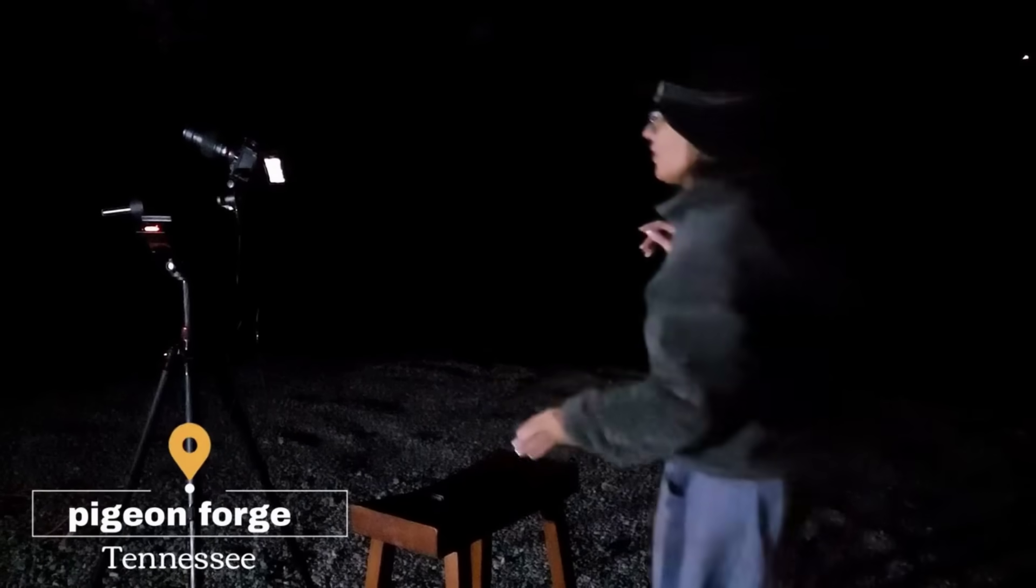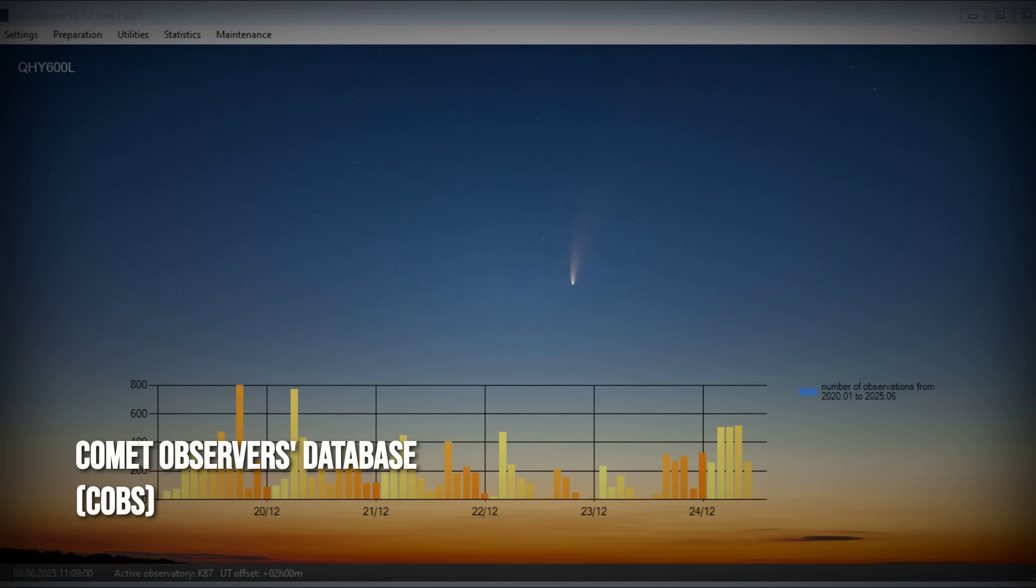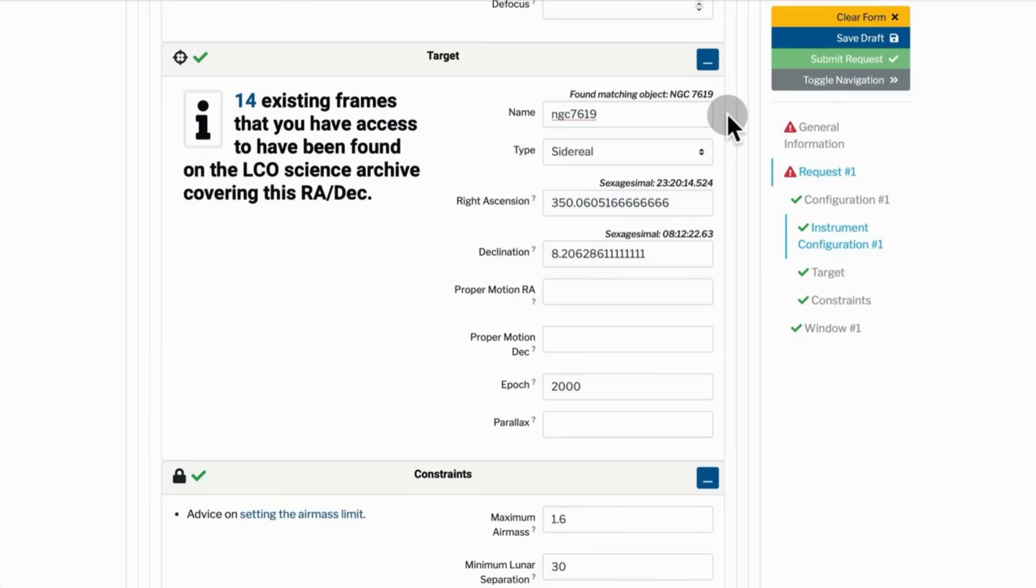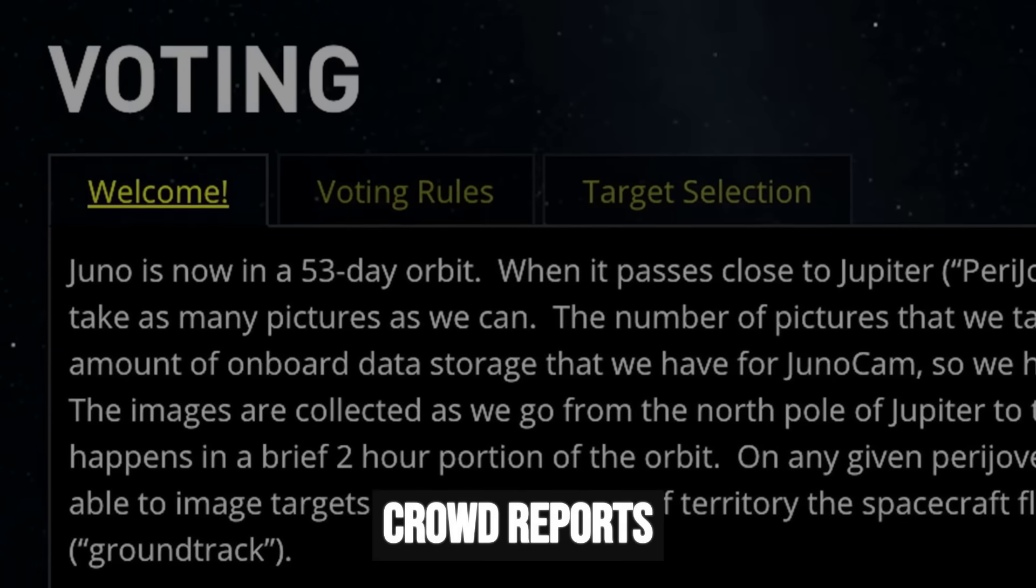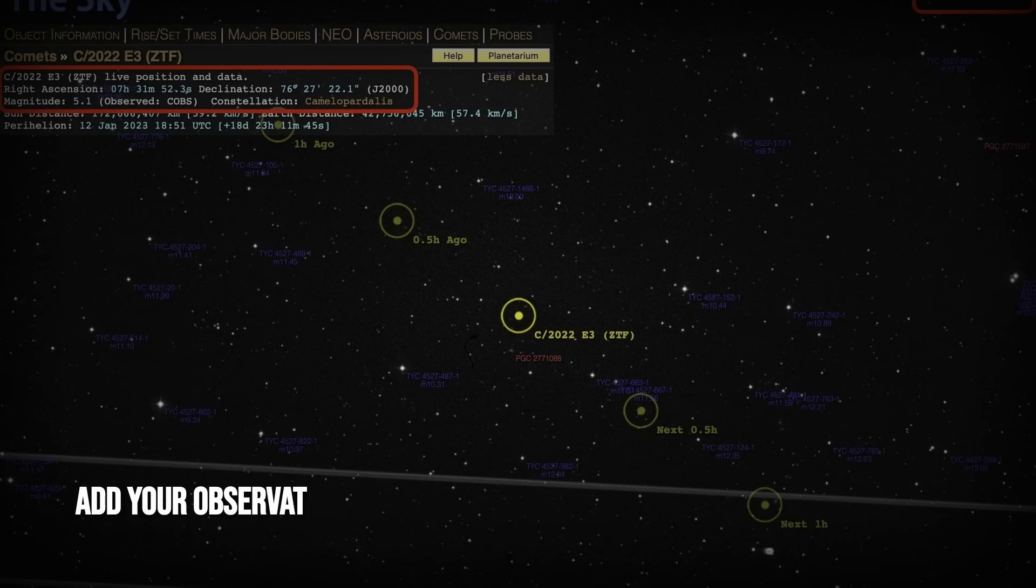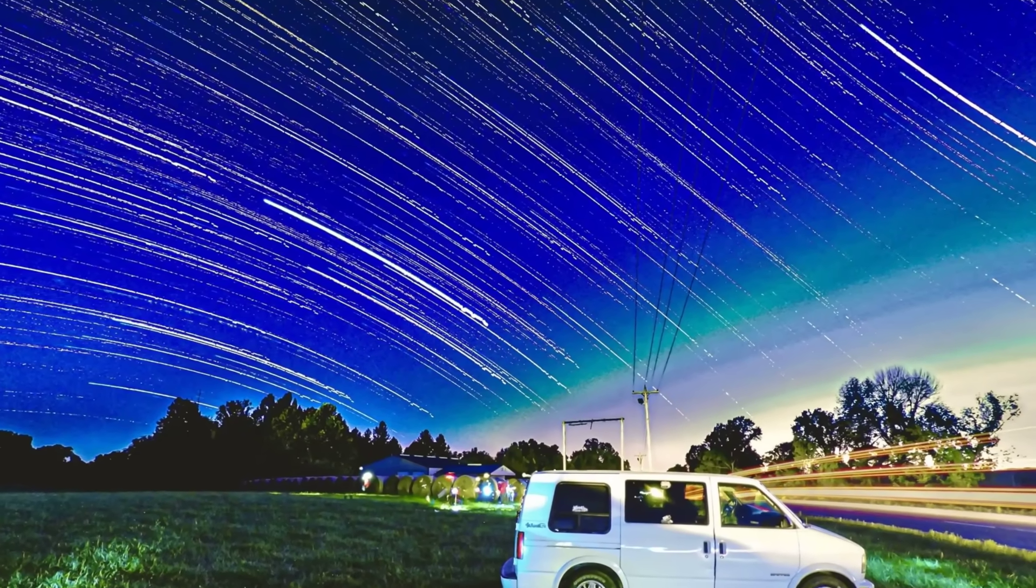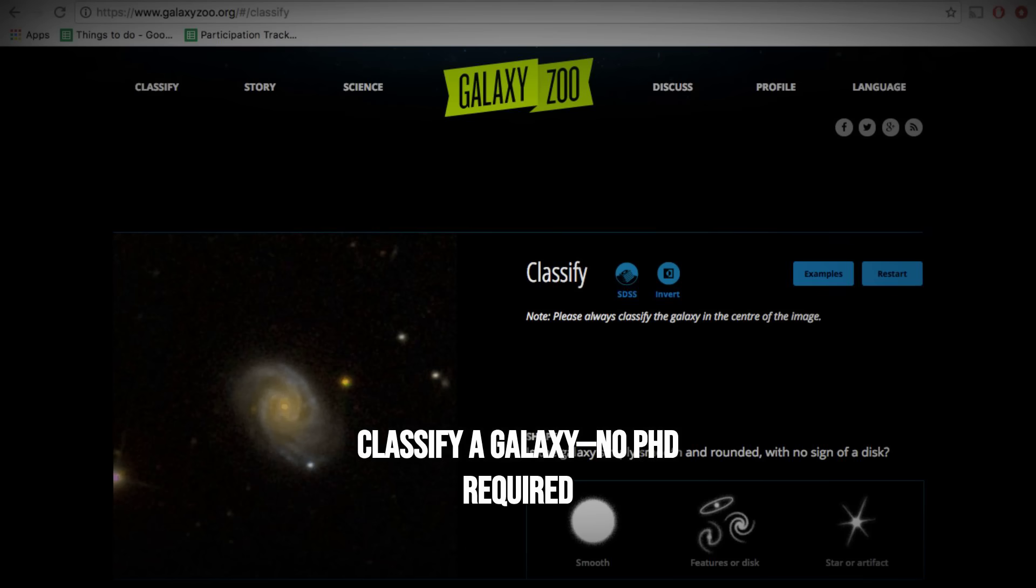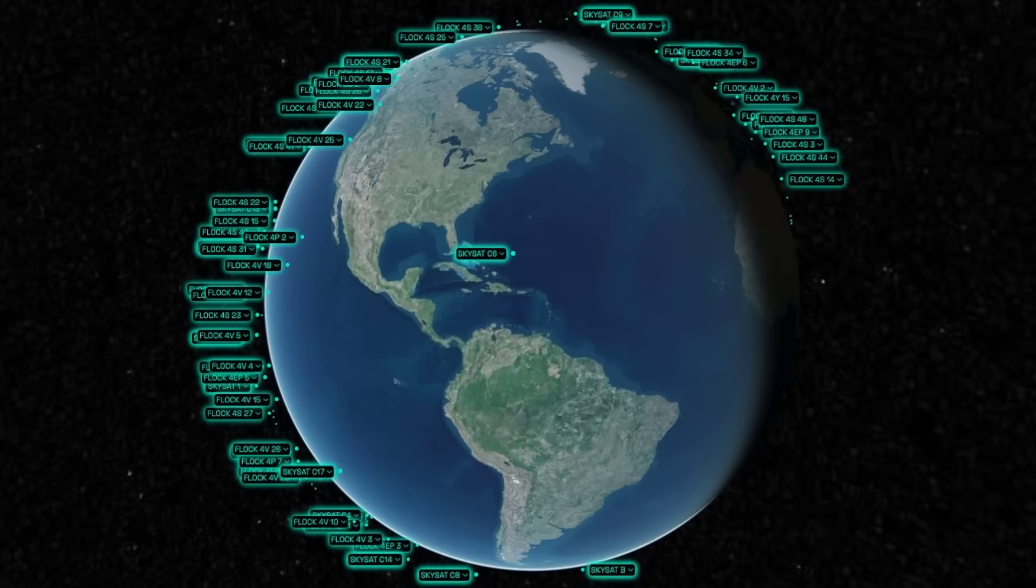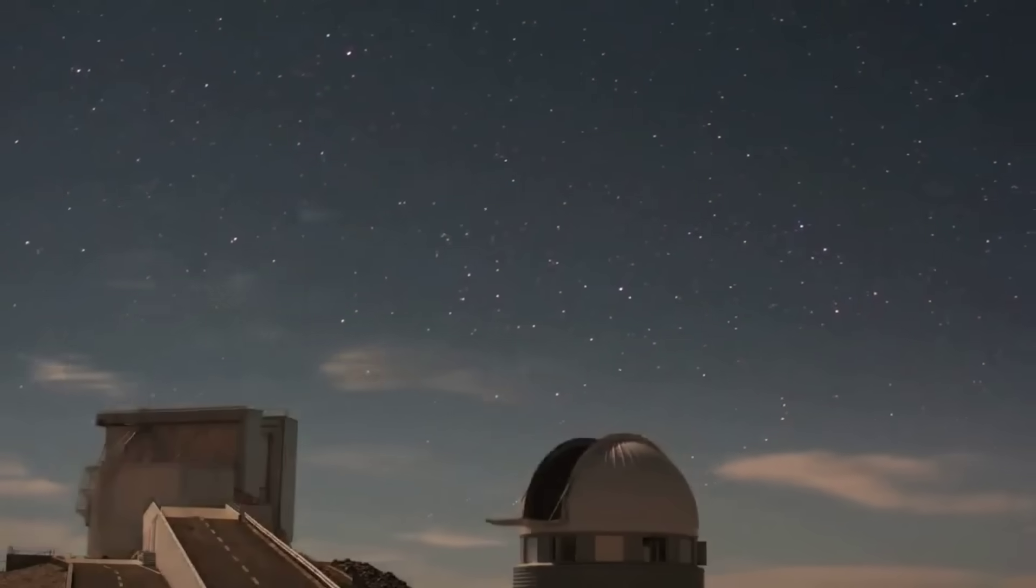Anyone with a telescope or even just curiosity can help track 3I-Atlas as it sweeps through the inner solar system. The Comet Observer's Database, COBS, lets amateur astronomers upload brightness estimates, tail measurements, and even sketches. These crowdsourced reports fill gaps between professional observations, especially when the comet is too close to the sun for big telescopes. The SkyLive compiles finder charts, real-time positions, and community light curves, making it easy to follow changes night by night. Data challenges pop up on platforms like Zooniverse, where volunteers help classify features or flag outbursts in public archives. Every observation, no matter how small, feeds into the global effort to understand this interstellar visitor. When it comes to 3I-Atlas, the front row isn't reserved for experts. It's open to anyone watching the sky.